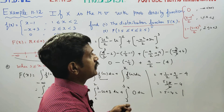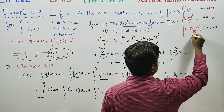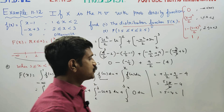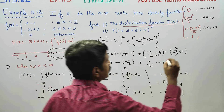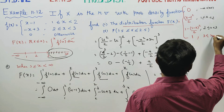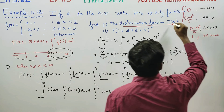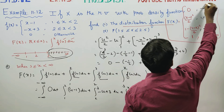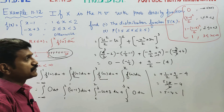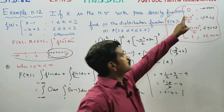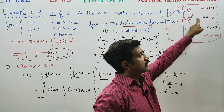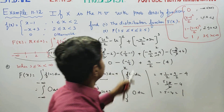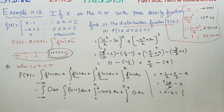The final cumulative distribution function is: F(X) = 0 for x < 1; (x−1)²/2 for 1 ≤ x < 2; 1 − (3−x)²/2 for 2 ≤ x < 3; and 1 for x ≥ 3. That is our final result of the distribution function. This is a 5-mark question.